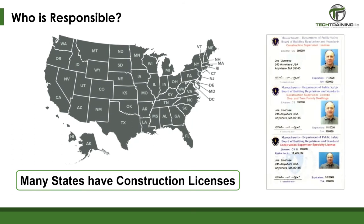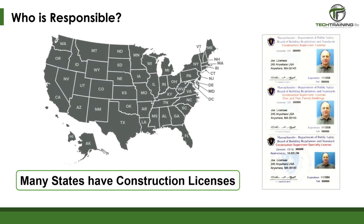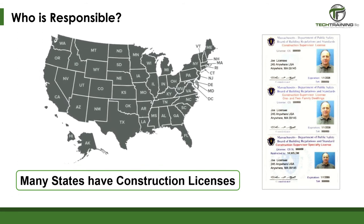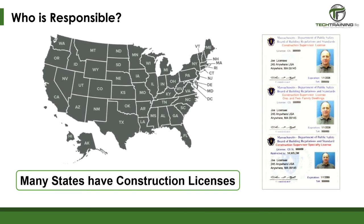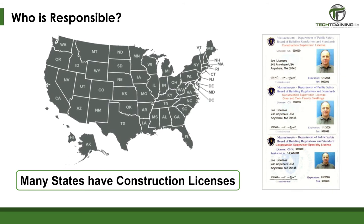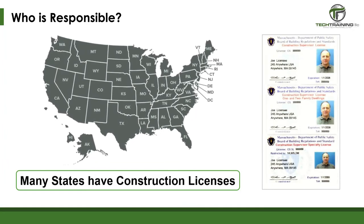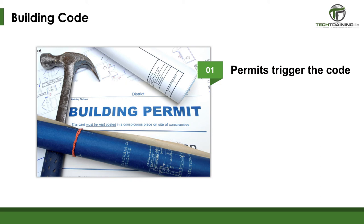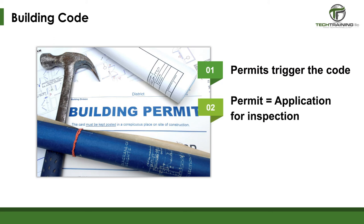Many states have training and certification for the constructors themselves, ensuring that those performing the construction have met standard requirements to construct safely. In some states like Massachusetts, the construction supervisor's license is required. To earn a construction supervisor's license, an individual must pass a 3-hour, 75-question exam. Other states may only require an individual attend a class, while other states require only that an individual register as a contractor. In most jurisdictions such as Massachusetts, it is the pulling of the permit which triggers the code. Once the permit is pulled, the local building inspectors and code officials know that construction is going to be taking place, and they begin the inspection preparation process.